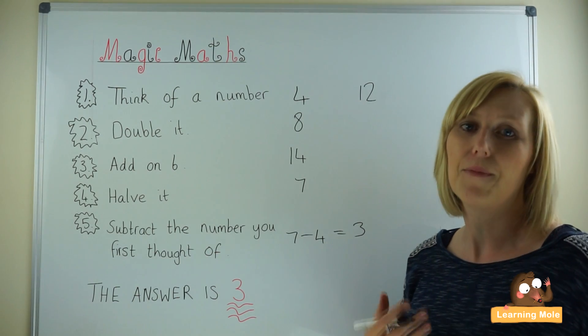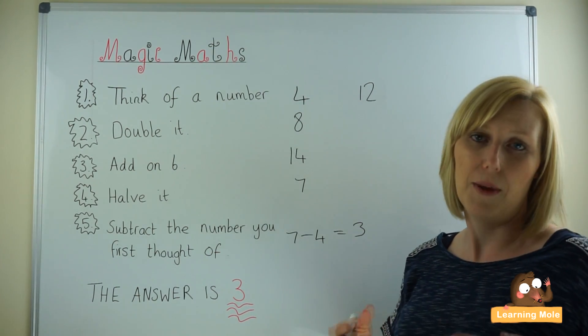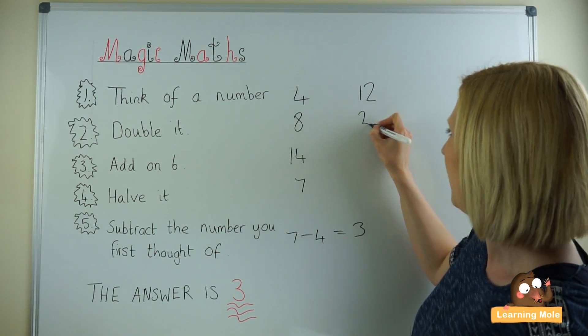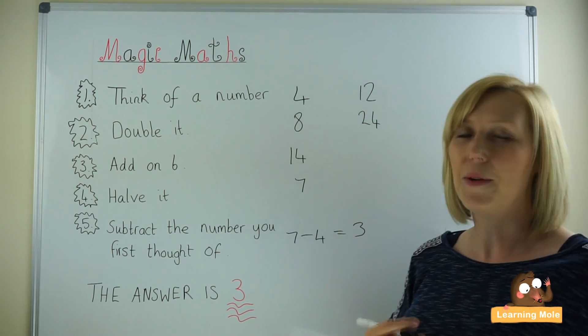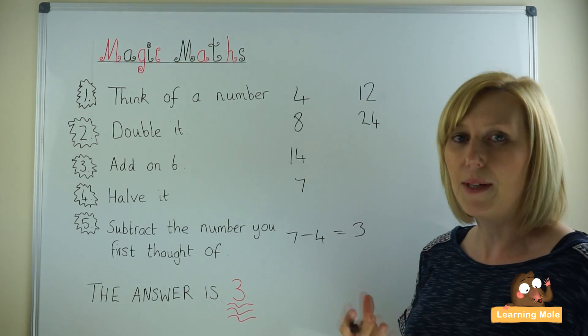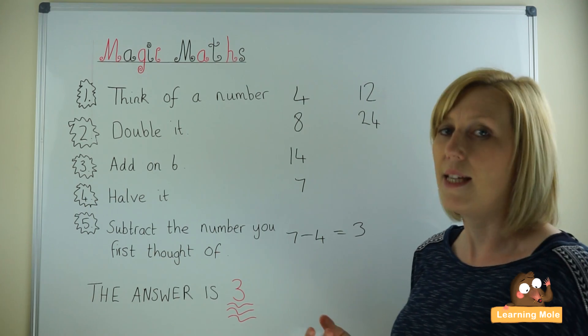So we're going to again double it, multiply it by 2 or add 12 plus 12 to get 24. Then we're going to add on 6. 24 plus 6 is 30.